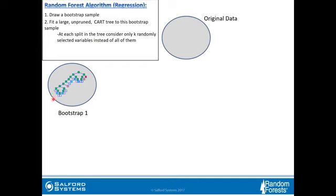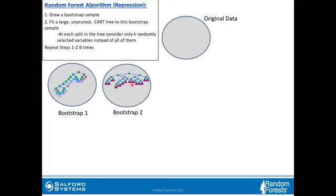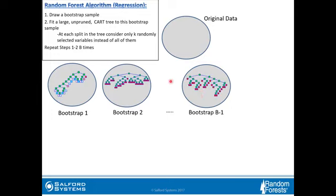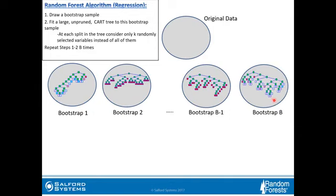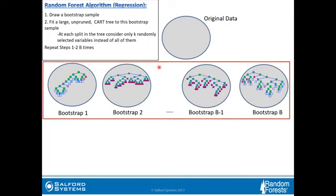We build our tree, and then repeat steps one and two b times — here's another bootstrap sample, another tree, and another. Notice how all of these trees are different. Finally, at our b-th bootstrap sample, we build another tree. This collection of trees is actually the random forest itself — a random forest is nothing more than this collection of CART trees.